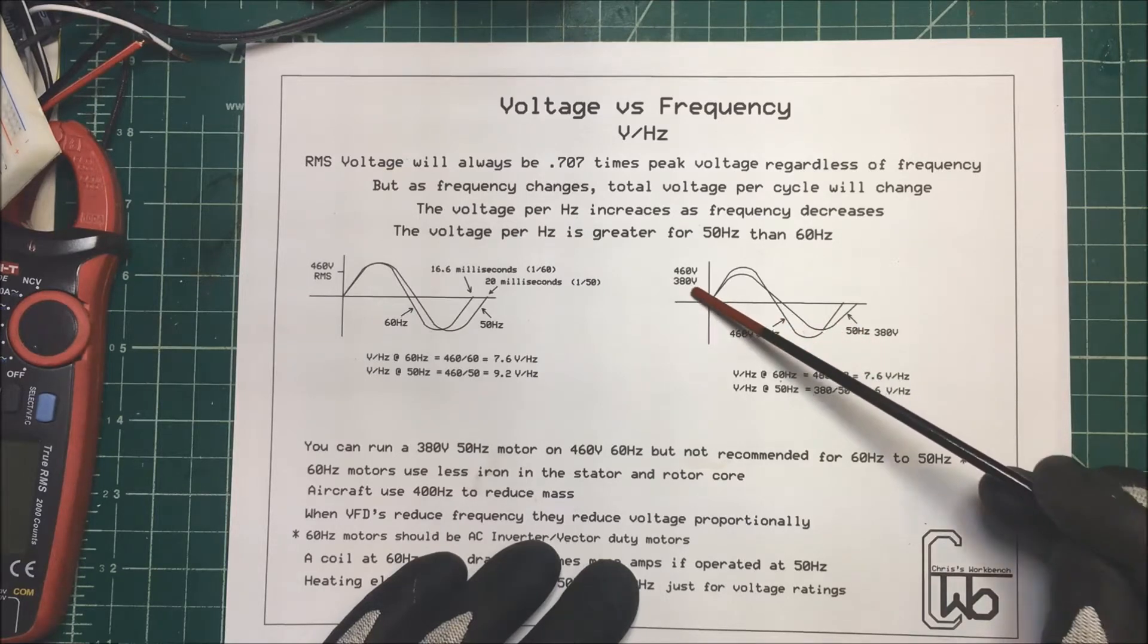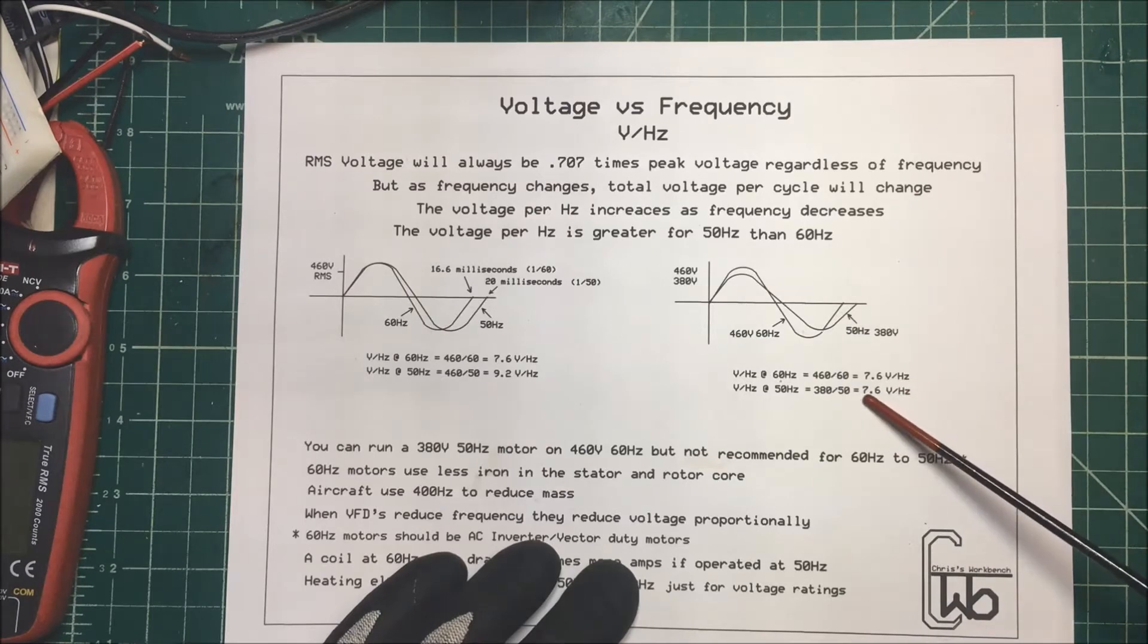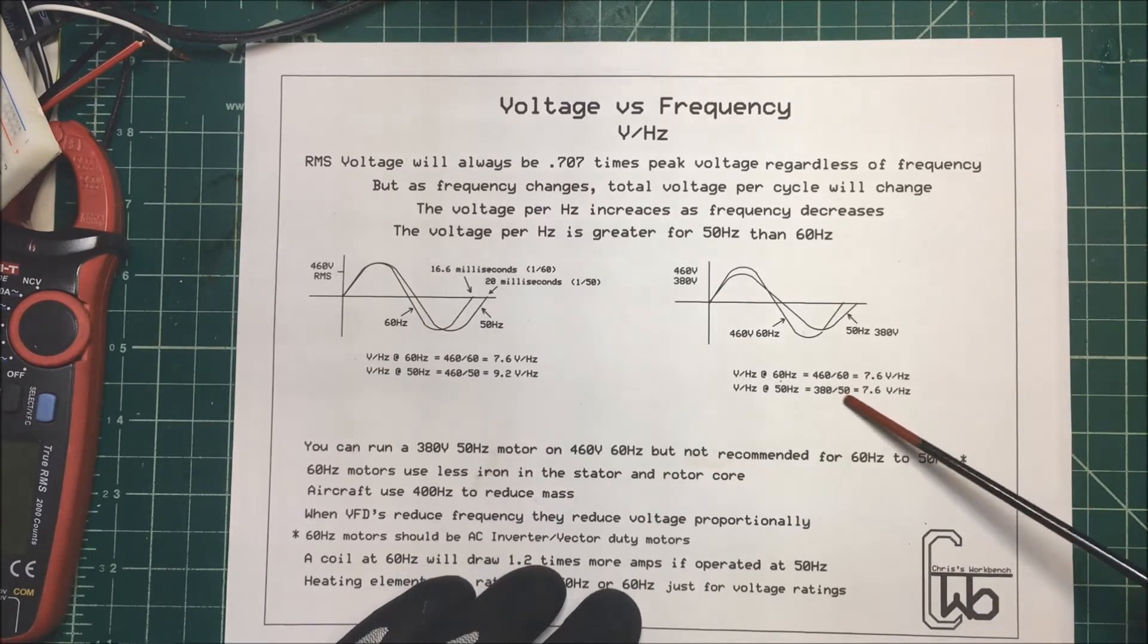But if we take our 50 and put that into our 380 volts, we're going to get 7.6 volts. It's going to be the same.